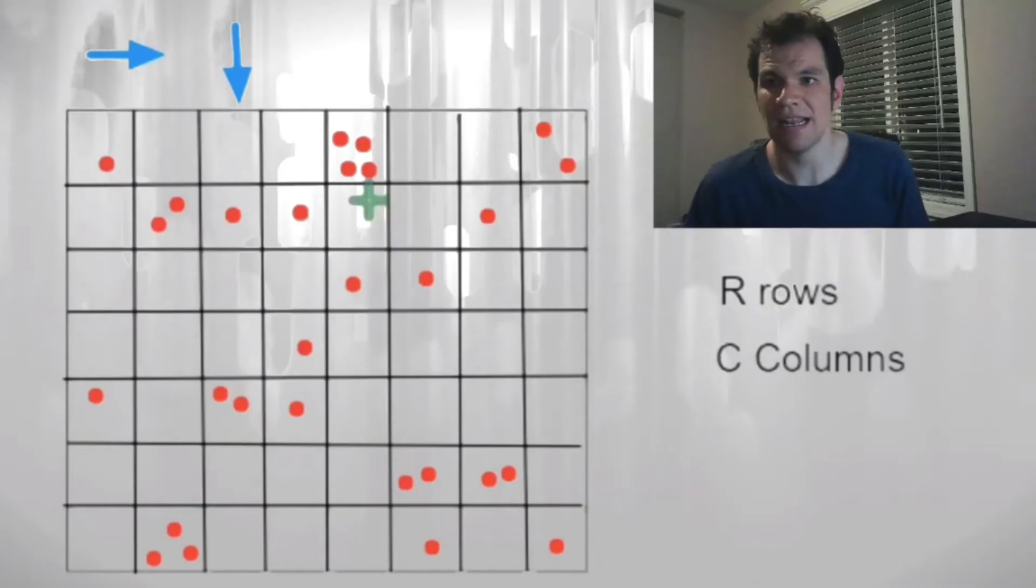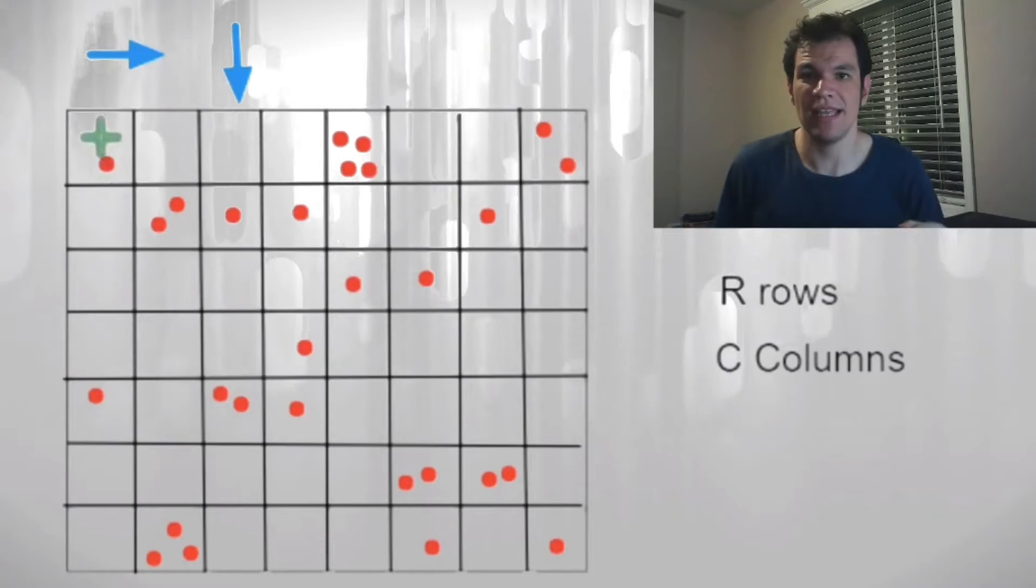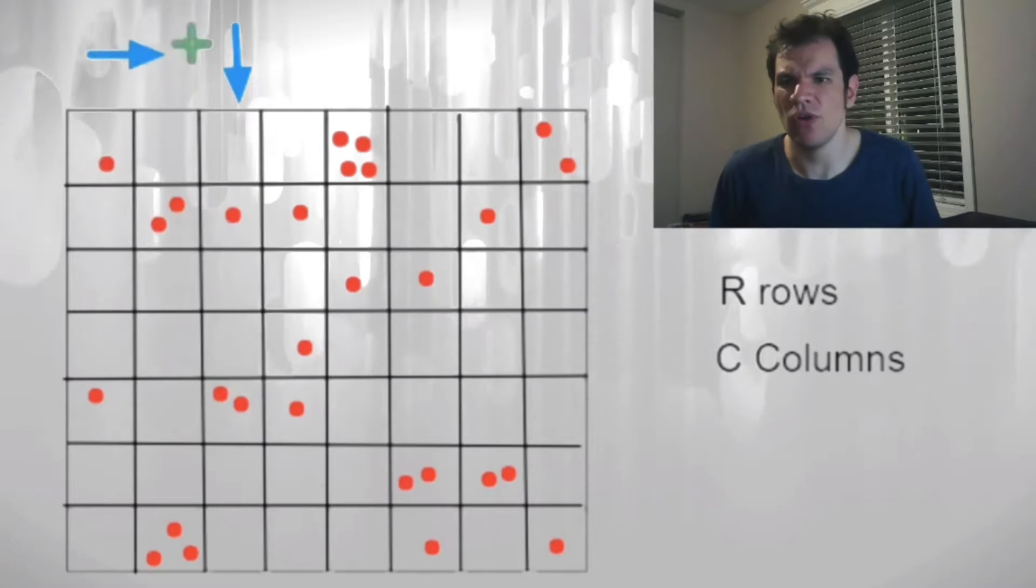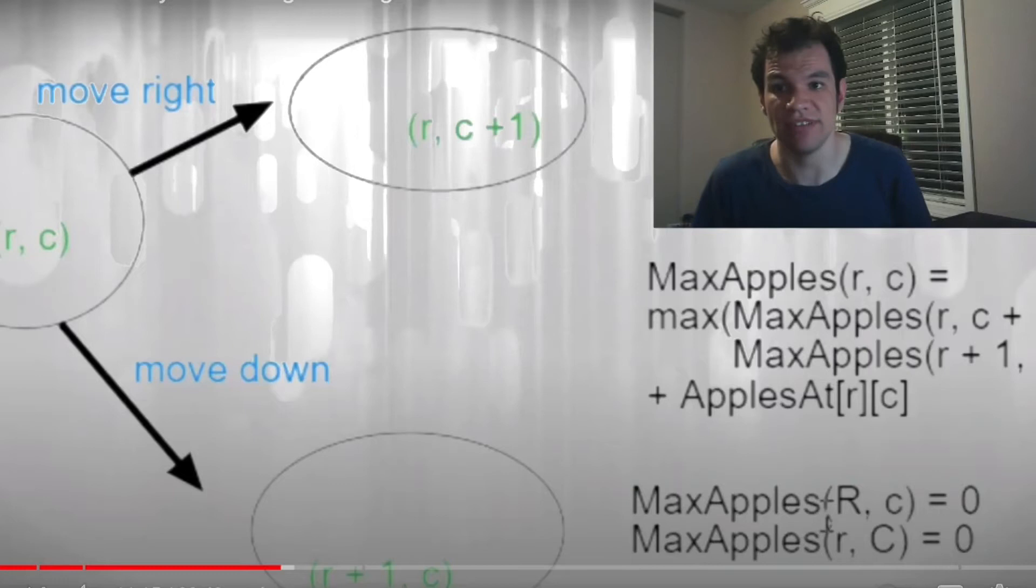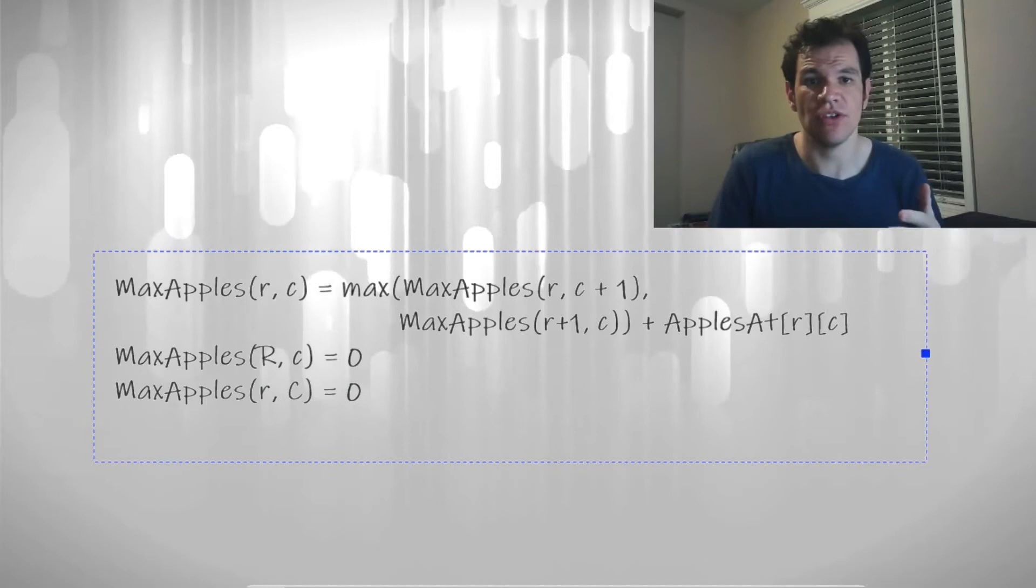Let's check our very first example about dynamic programming, the one about the robot and collecting apples. At that time, we found a recurrence. This recurrence to be precise. And I presented to you a recursive solution using memoization.